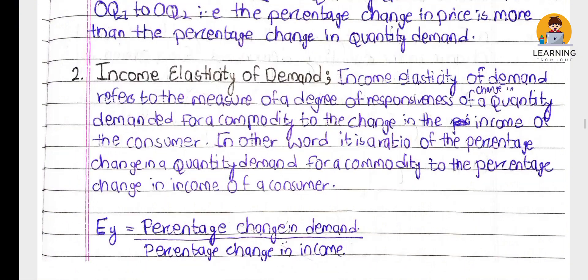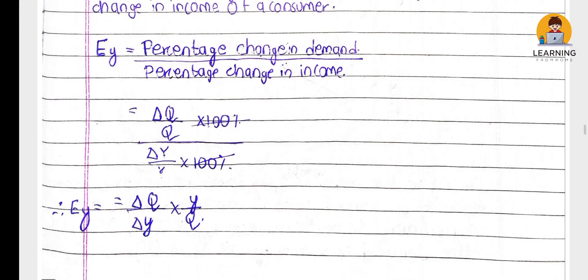Income elasticity of demand formula: we denote it as EY, where E is elasticity and Y is income (yield). The formula is: EY equals delta Q by delta Y into Y by Q.